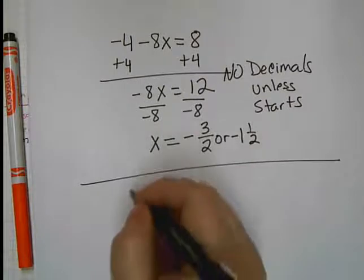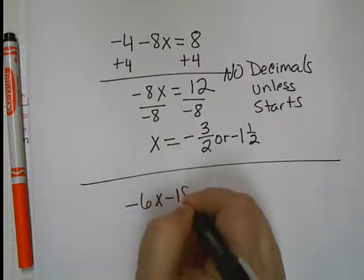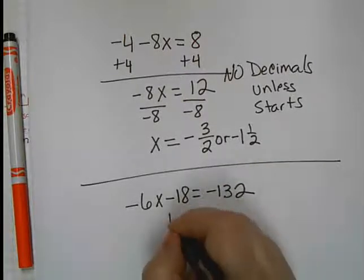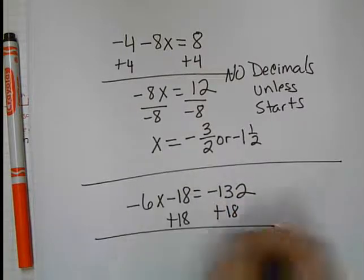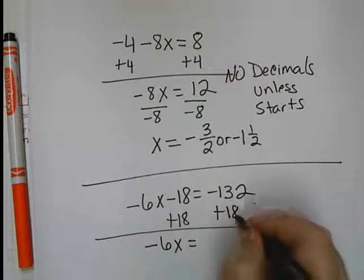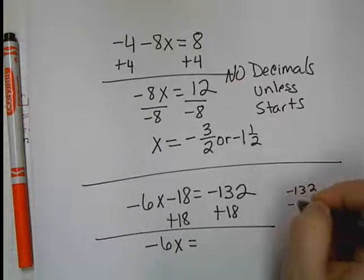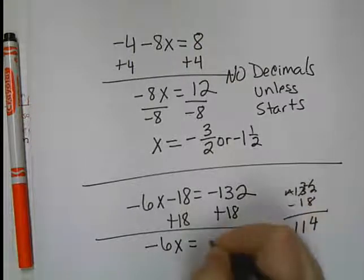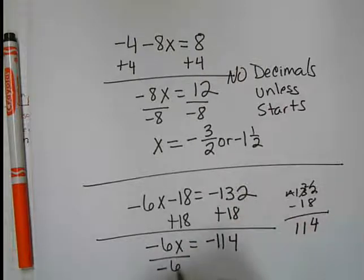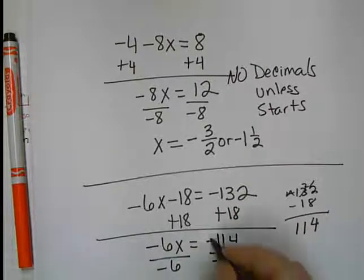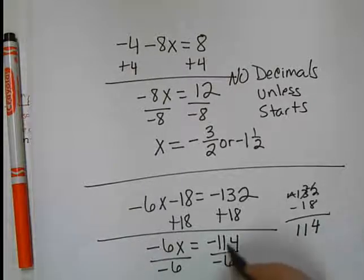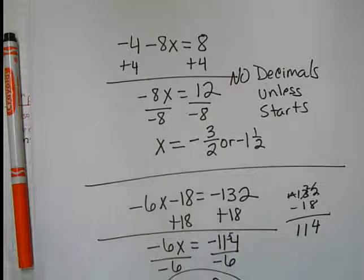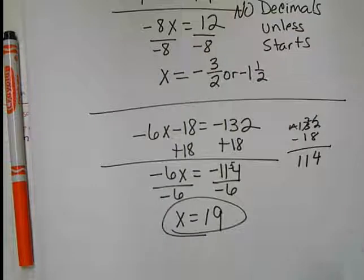All right, let's try one more of these. Okay, so I'm going to add 18. Negative 6X. Let's see, negative 132 minus 18. It's going to give me negative 114 divided by negative 6. Negative divided by negative is going to give me a positive. 6 goes into 11 one time with 5 left over. 6 goes into 54, 19.